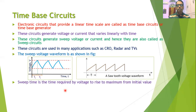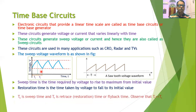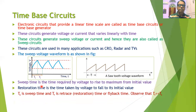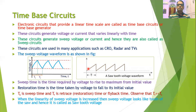The sweep time is the time required by the voltage to rise to its maximum value; this time period T is called the sweep time. The restoration time or flyback time is the time taken by the voltage to fall to its initial value. One can observe that the sweep time is much larger than the restoration time, that is the value of TR must be very small compared to TS. When the linearity of the sweep voltage is increased, it looks like the tooth of a saw, and therefore it is called the sawtooth voltage or ramp voltage.